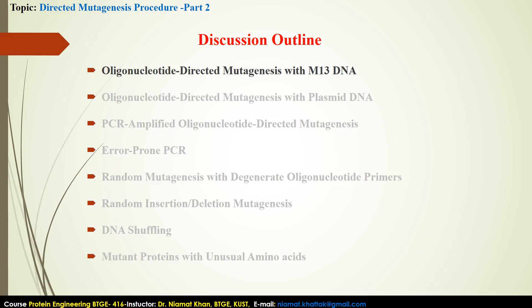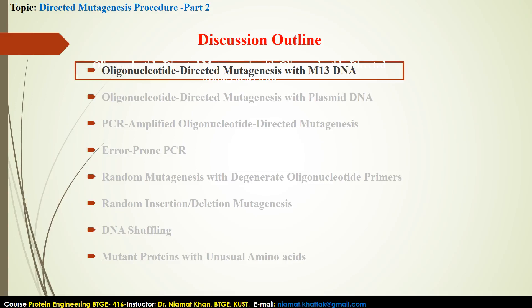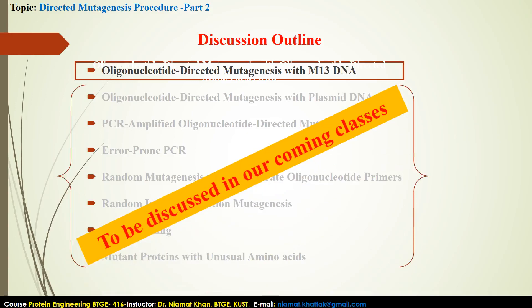Modified DNA are transcribed with altered codons which are translated by ribosomes to incorporate our desired amino acids. Later we can test different properties of the new protein that is modified at amino acid level. Among these different strategies, in today's lecture we will study about oligonucleotide directed mutagenesis with M13 DNA as a template. The rest of the procedures will be discussed in our consecutive classes.